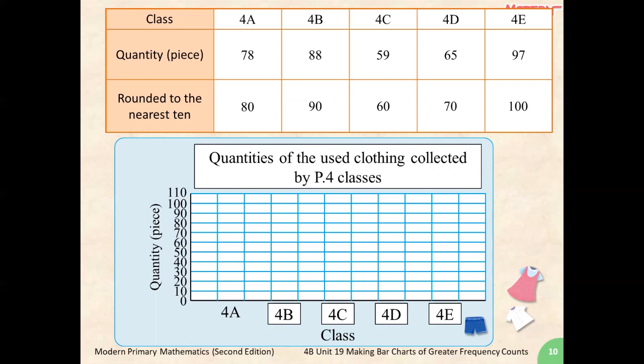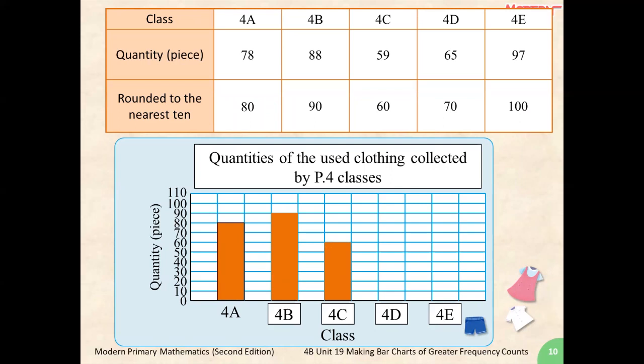Then, we will have to match the data with the two different axes and fill out the bar chart showing a 1 to 10 representation. So, first, for 4A, we will have to draw the bar up to the line saying 80. For 4B, since it has been rounded up to 90, we have to draw the bar up to the line representing 90. For 4C, since the number rounds to 60, we have to draw up to 60. For 4D, since we rounded to 70, we have to draw a bar up to 70. And lastly, for 4E, since we have rounded up to 100, we have to draw a bar marking up to 100.